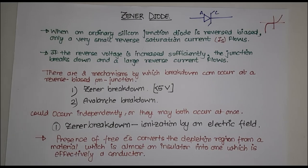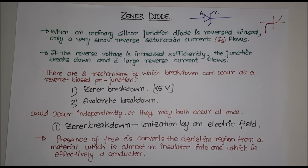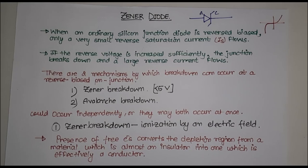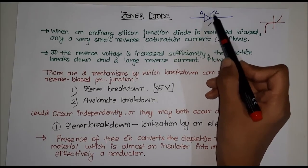When a large reverse current flows, there is a possibility that our junction will be destroyed — it could destroy the junction. Now there are two mechanisms by which breakdown can occur in reverse bias condition: first is Zener breakdown, and second is called avalanche breakdown. The Zener diode symbol has an anode and a cathode.